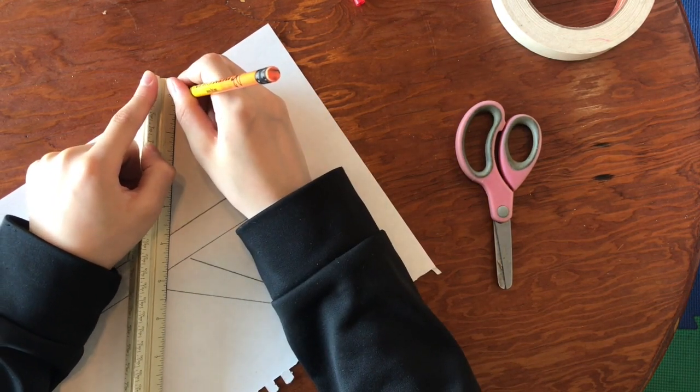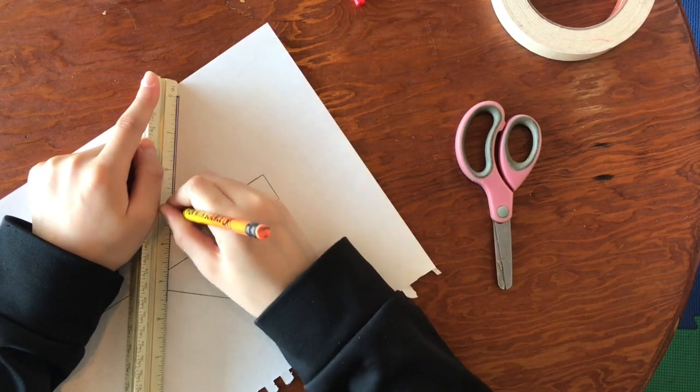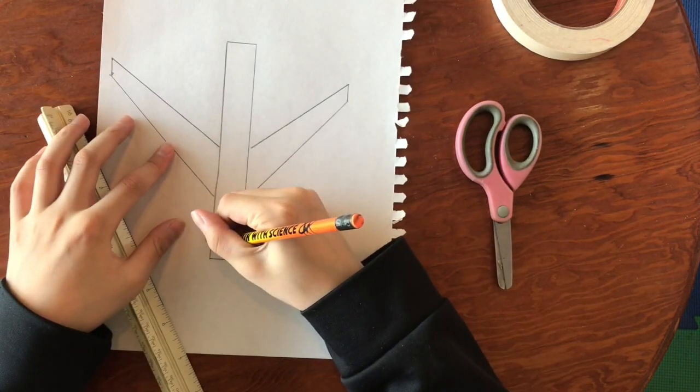You should measure how far the distance is from the other wings first. It will be easier to measure.